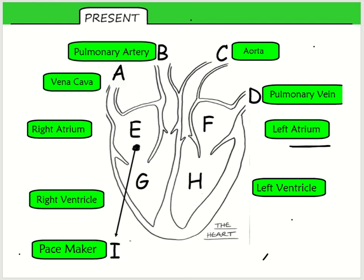The left-hand side is thicker because it has more muscle, and because it has more muscle it can pump blood with more force. It needs to do that because the blood from the left-hand side is actually being pumped around the whole body. The artery in the middle — using VARV — is the main artery, called the aorta. I remember it as 'aorta the body'.